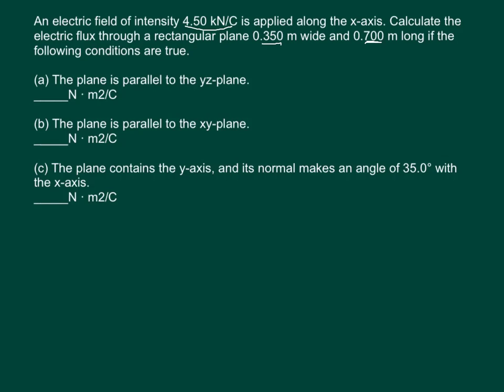The first condition is the plane is parallel to the yz-plane. Condition two is the plane is parallel to the xy-plane. Condition three is that the normal makes an angle of 35 degrees with the x-axis.